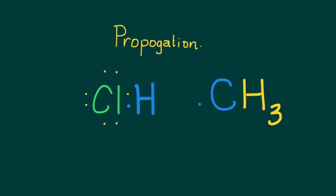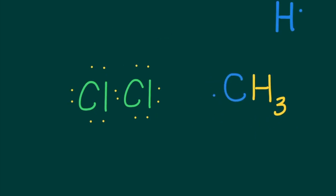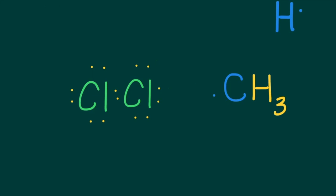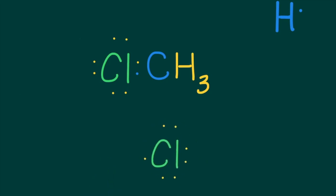But another product of this is a CH3, a methyl group, now with a free electron, another free radical. And this free radical then goes on to interact with these chlorine atoms, forming Cl-CH3, or CH3Cl. Again, the result is a chlorine free radical.